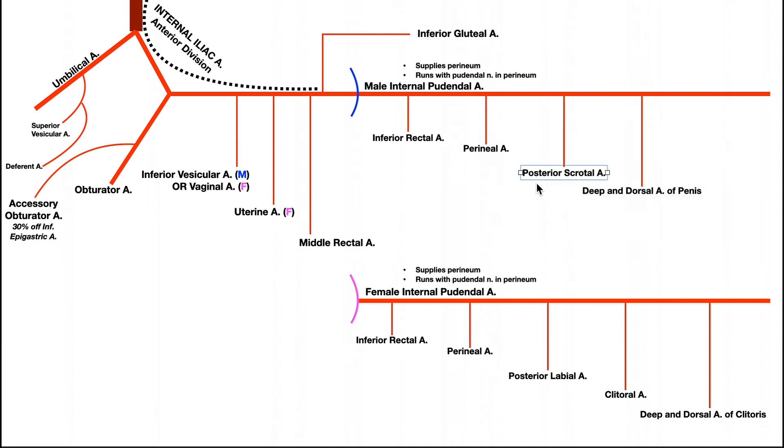So in males, the next branch that comes off is the posterior scrotal artery. This supplies the scrotum. And obviously, only males have scrotums. So in females, we have a labial artery, a posterior labial artery. This artery supplies the labia majora and labia minora. And that's interesting because the scrotum in males, its sexual homologue in females are those labia majora and minora.